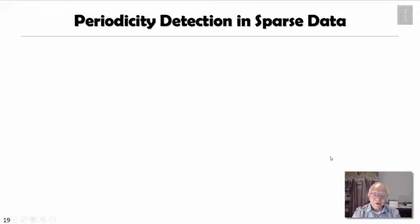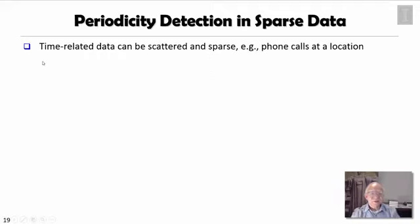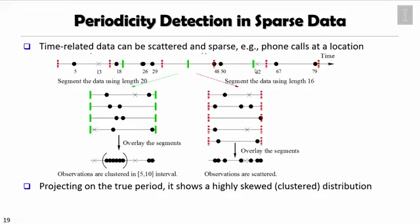In the previous study, we assumed the periodicity could be detected because the period is somewhat known. In many cases, time-related data can be scattered and sparse — for example, phone calls at a location could be very sparse. If we map the calling times in a sequence — say 5, 13, 18, 26, 29 — and look at the time sequence directly, it is very hard to find periodicity.